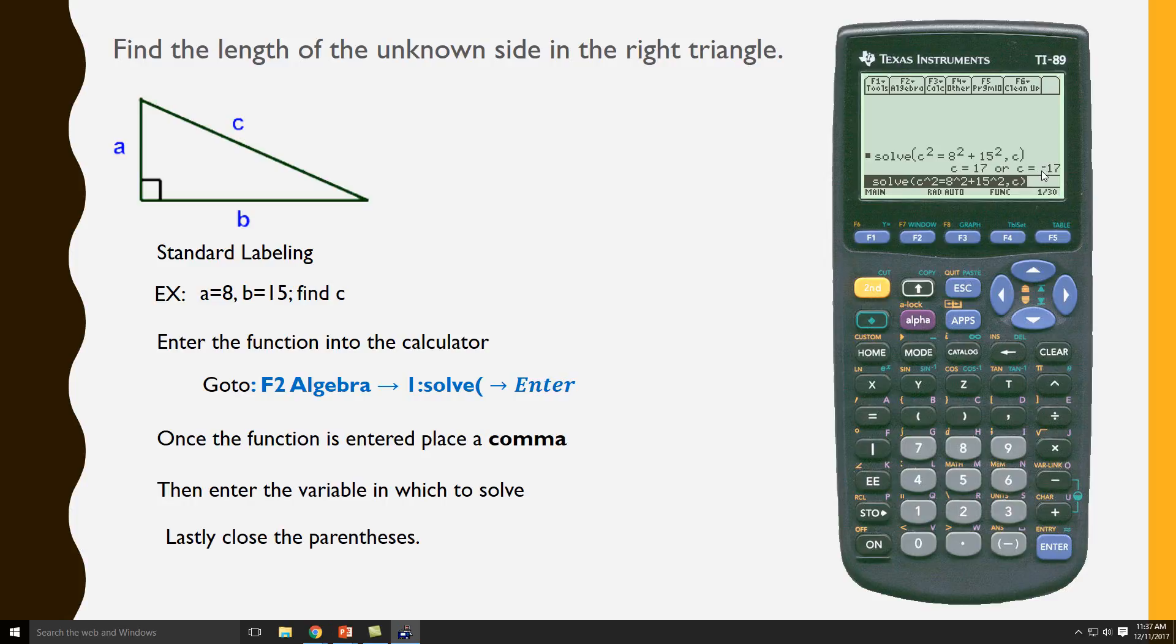You will notice that we get two values: a negative 17 and a positive 17. Since we are talking about distance, the distance has to be a positive value. Therefore the length of our hypotenuse is 17. Thanks for watching.